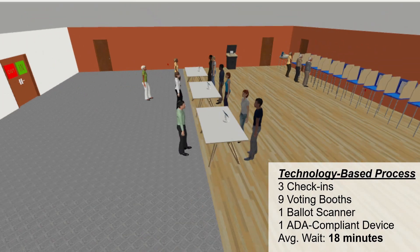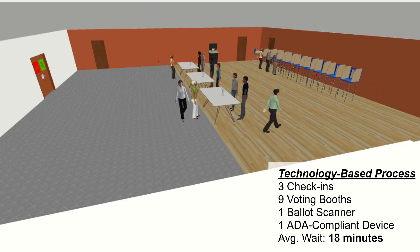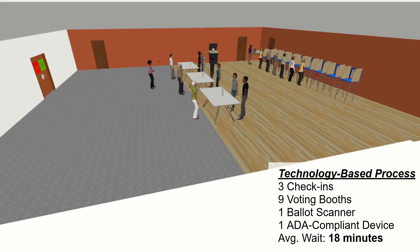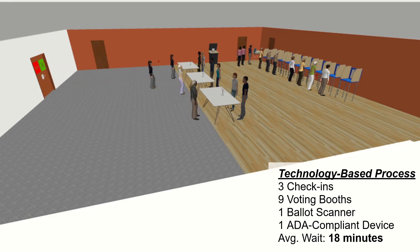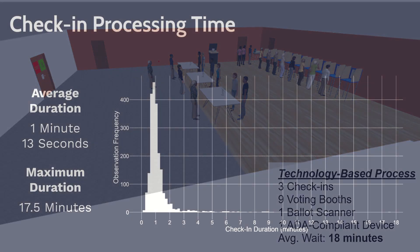We assume that the resource allocation for this voting process consists of three check-in devices, nine voting booths, one ballot scanner, and one ADA-compliant ballot marking device. With this resource allocation, voters wait an average of 18 minutes to vote.